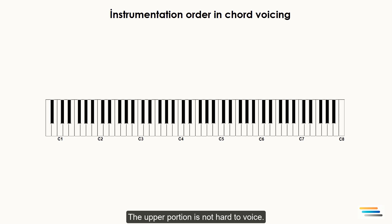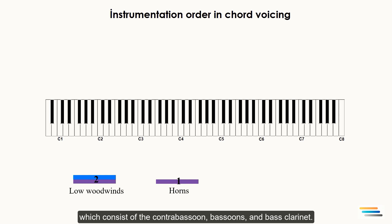Let me explain it in the graphic. When you are going to voice the harmony between horns and woodwinds, follow these steps: Always start with the horns, then go to find the low woodwinds which consist of the contrabassoon, bassoon, and bass clarinet. Finally, voice the upper portion with the high woodwinds, which contain clarinet, oboe, and flute families.